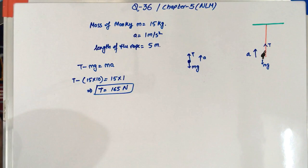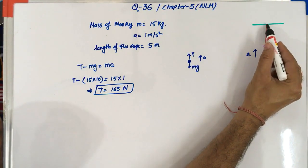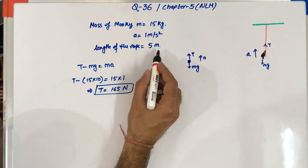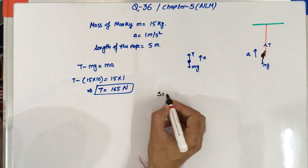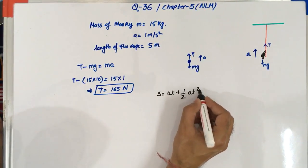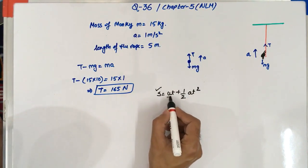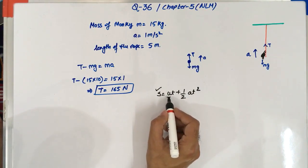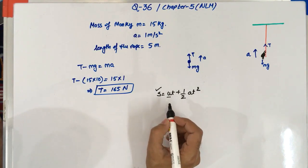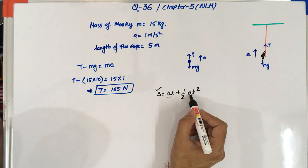Now for the second part we have to find the time required to climb up the monkey to the ceiling. So we can use the distance formula as S is equal to UT plus half of A T square where S is known to us which is 5 meter, U is the initial velocity which is 0 because the monkey is starting from the rest, T we have to find it out. Acceleration is given as 1 meter per second square.